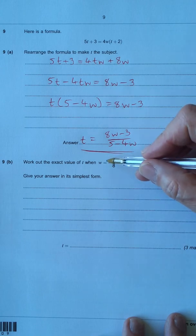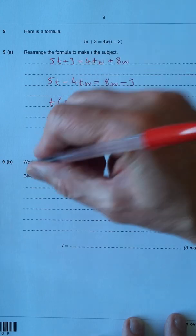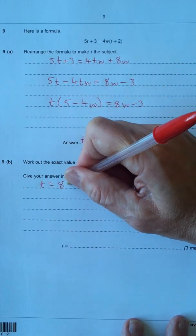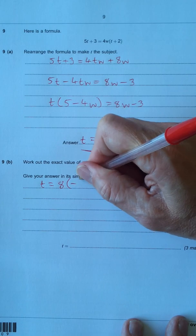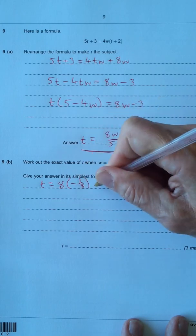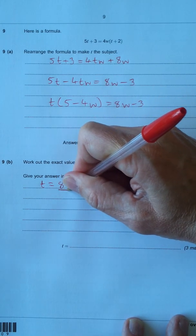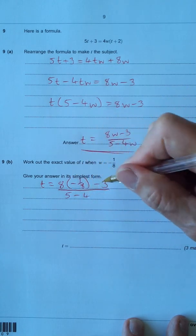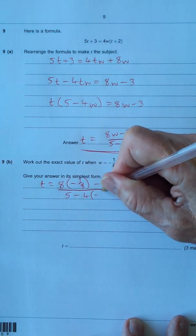So let's just substitute w as negative 1 eighth. So we've got t equals 8w, and we'll replace that with minus 1 eighth, minus 3, all over 5 minus 4w, and w I'll put minus 1 eighth again.